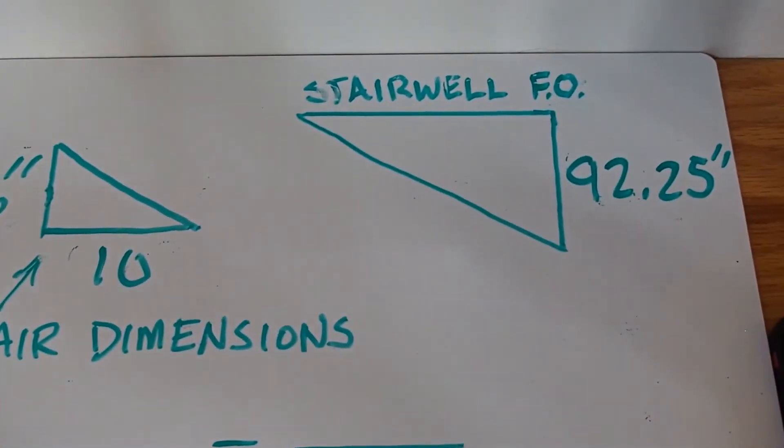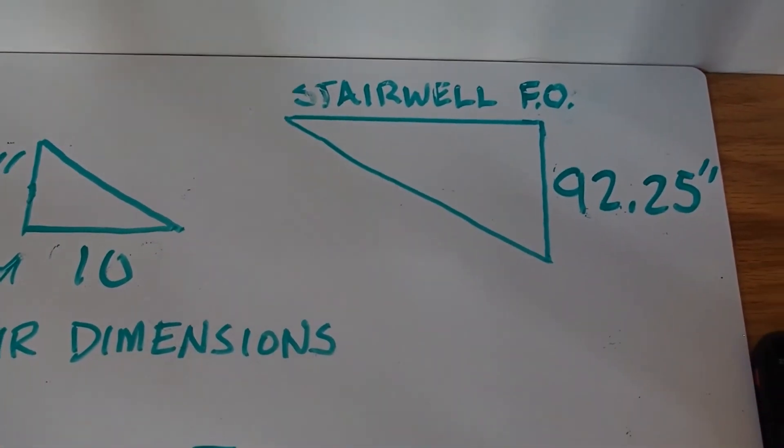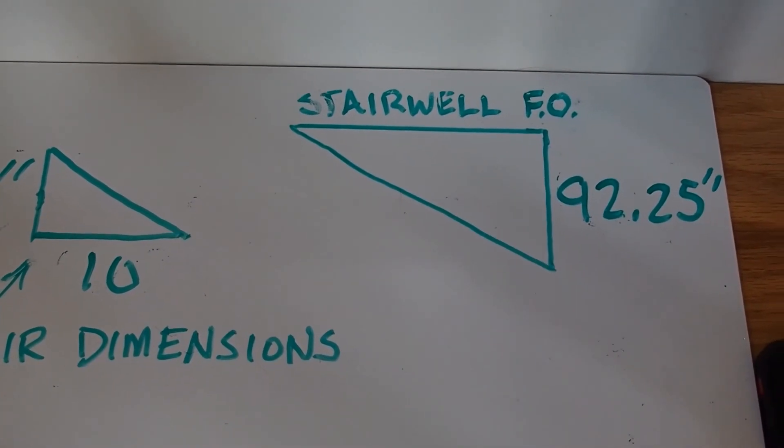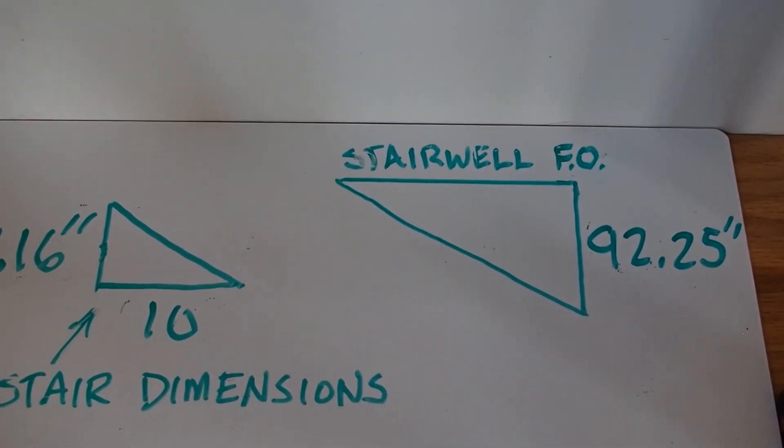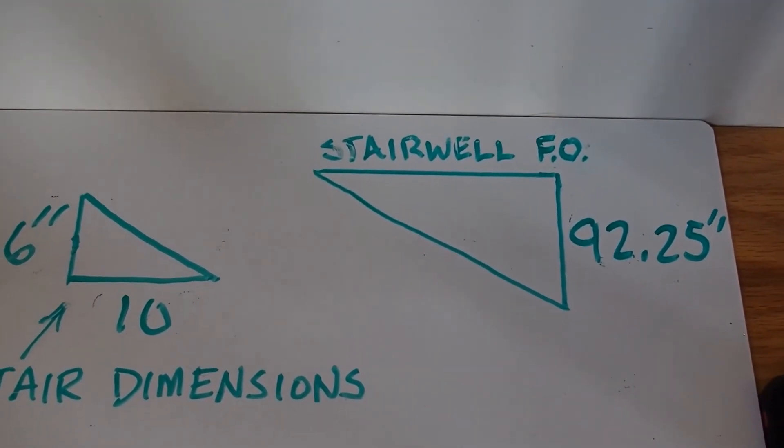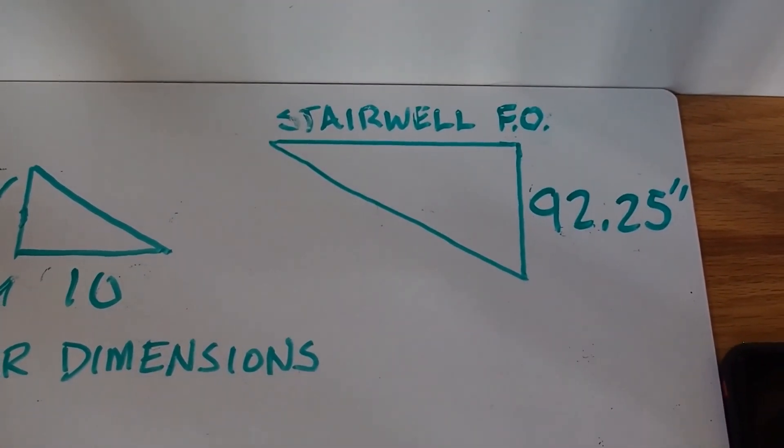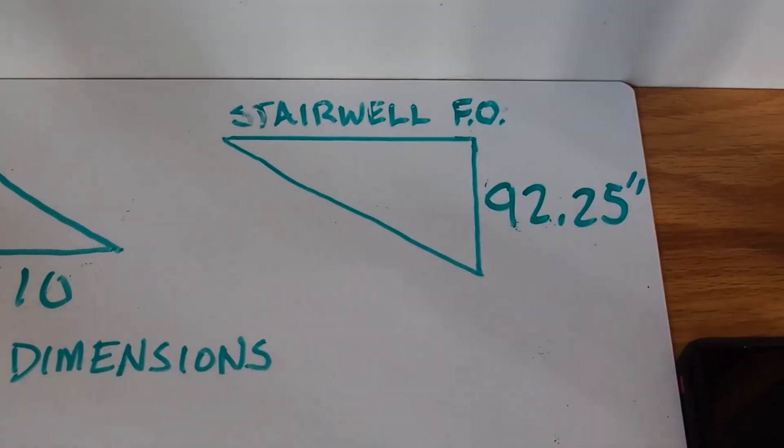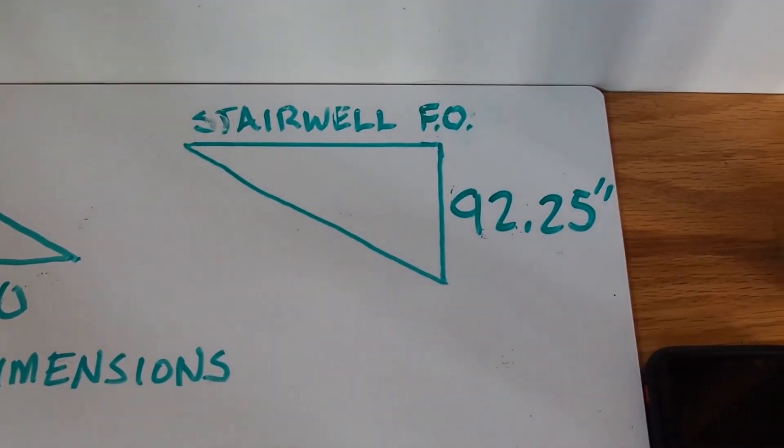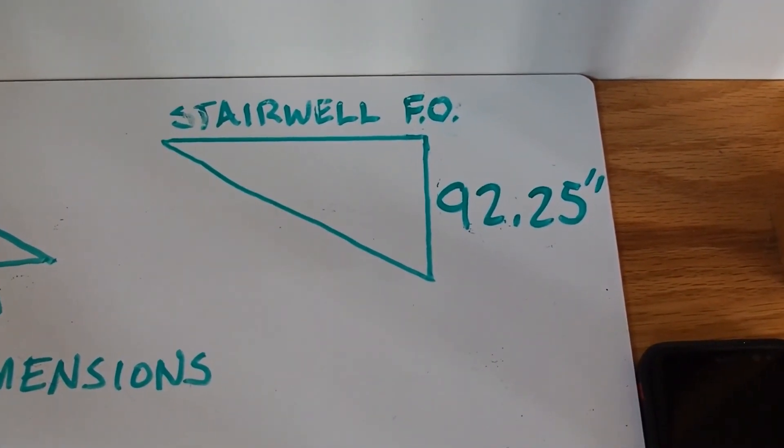I'm also going to do this one as if it was a public stair. A public stair has a headroom requirement of 2,050 millimeters, which in imperial is 81 inches. 11.25 plus 81 equals 92.25. So there's the rise of the big triangle.